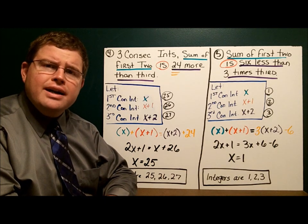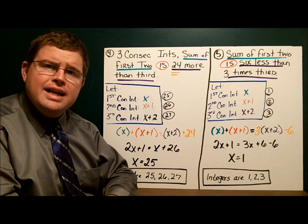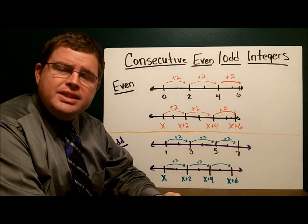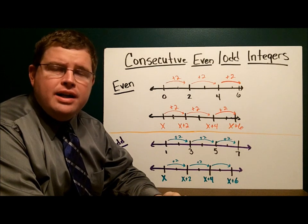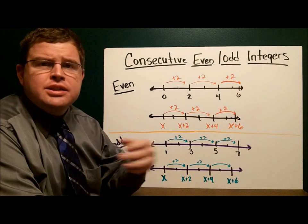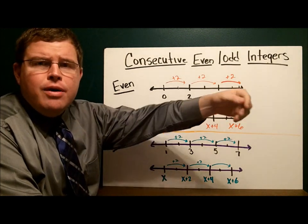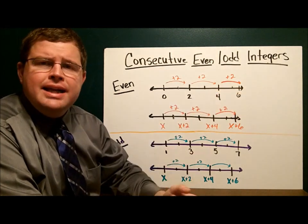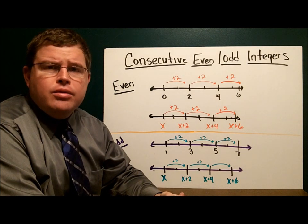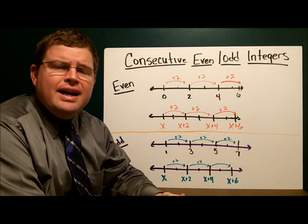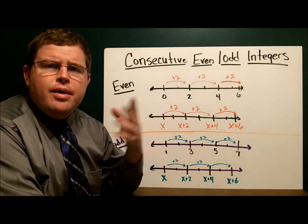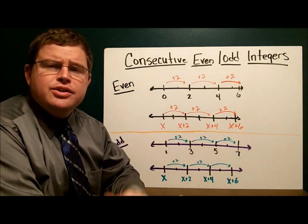Next, let's take a look at consecutive even and consecutive odd integers. When we talk about consecutive even integers, we're talking about even integers in a row, such as two, four, six, eight, ten, twelve, fourteen, sixteen, eighteen, twenty. Or odd integers that are all in a row, such as one, three, five, seven, nine, eleven, and so on. So even integers in a row, or odd integers in a row.